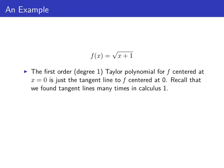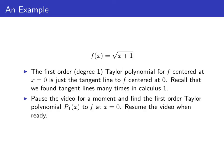The first order, or degree 1 Taylor polynomial for f centered at zero, is just the tangent line for f centered at zero. Recall that we calculated tangent lines many times in Calculus 1. So, use your knowledge of tangent lines, pause this video for a moment, and find the first order Taylor polynomial for this function f centered at zero. Then resume the video when you're ready.